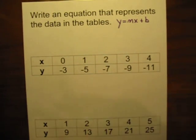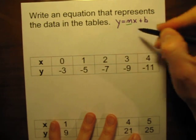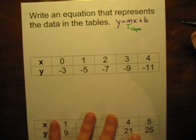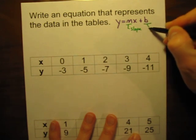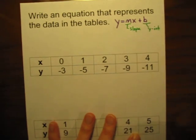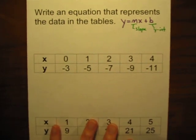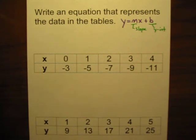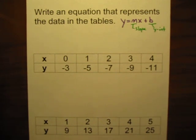In slope-intercept form, m represents our slope, and b represents our y-intercept. Those are the two things we need to figure out in order to write each equation — the slope and the y-intercept for each data table. And we're going to do this without the luxury of looking at a graph; we're only going to look at the numbers in the data table.